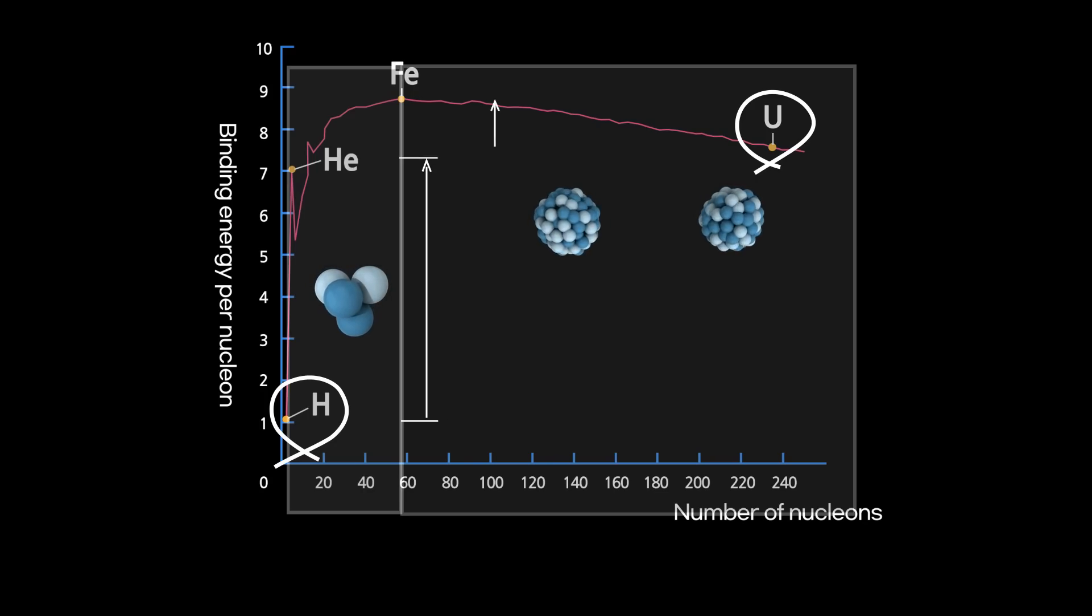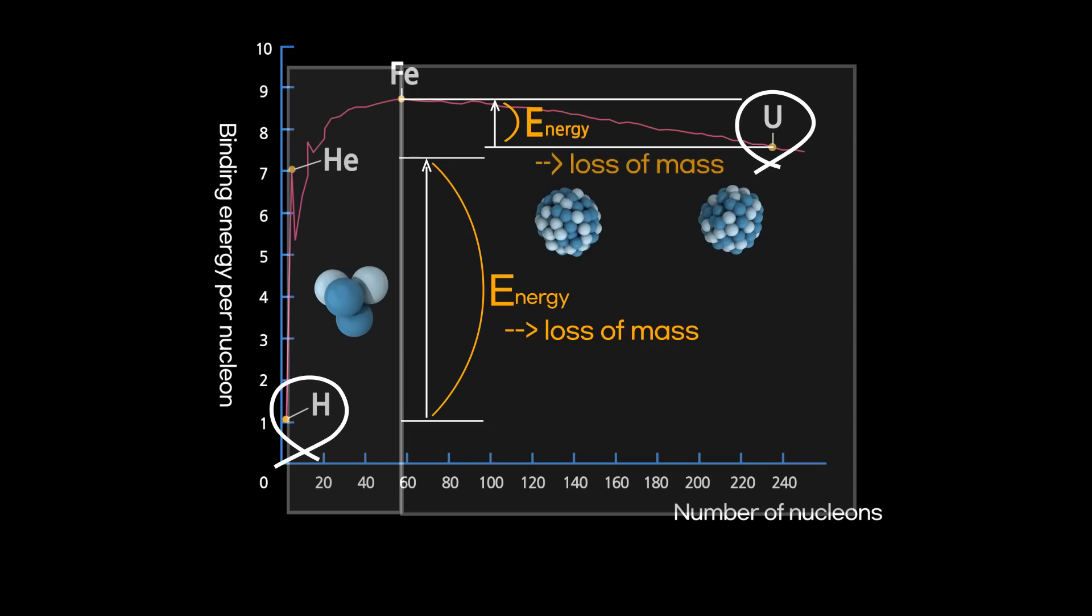When nuclear fusion occurs, bonding energy increases this much, and nucleons go through a loss of mass corresponding to this energy. In nuclear fission, the bonding energy per nucleon also increases, but the increase is not as big, and the split elements lose mass corresponding to this energy.